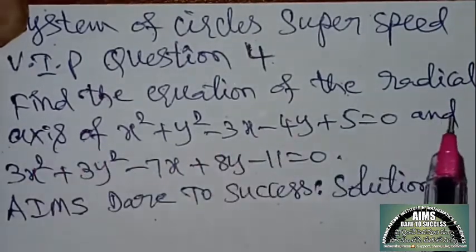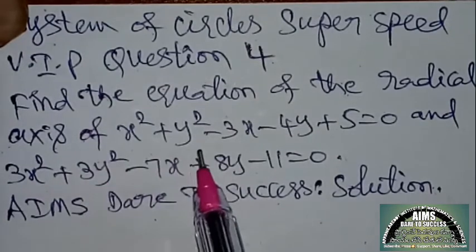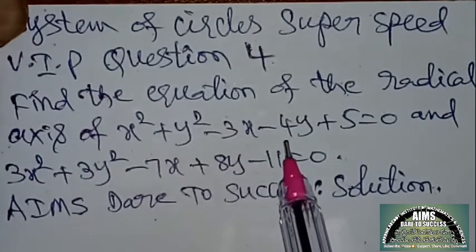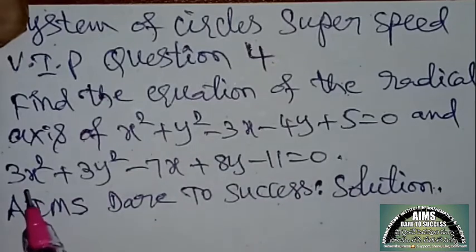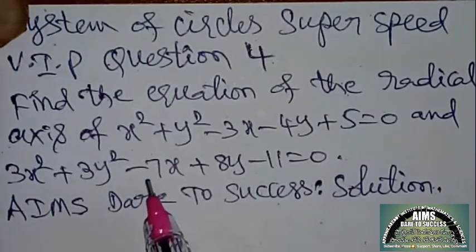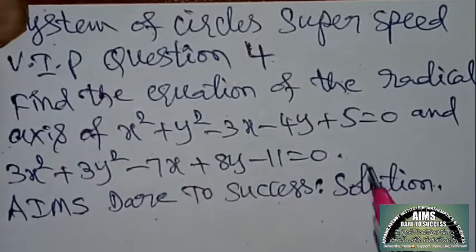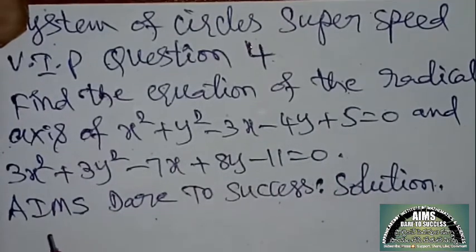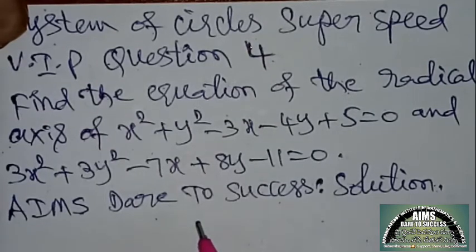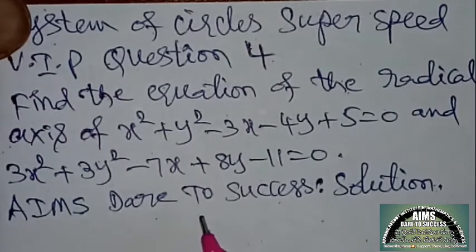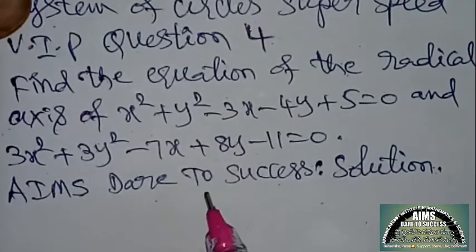Find the equation of the radical axis of x² + y² − 3x − 4y + 5 = 0 and 3x² + 3y² − 7x + 8y − 11 = 0. AIMS Dare to Success solution — AIMS is not an institution, it is a free service through social media.